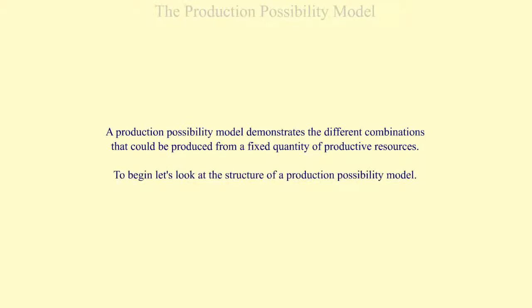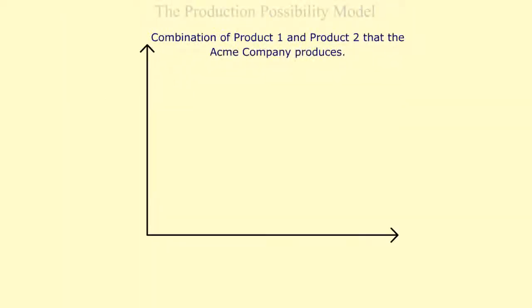To begin, let's look at the structure of a Production Possibility Model. First, there is a title to let the reader know exactly what you are graphing. The title is a combination of Product 1 and Product 2 that the Acme Company produces.